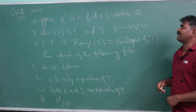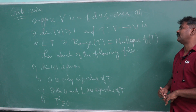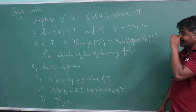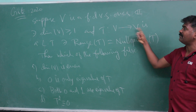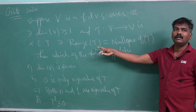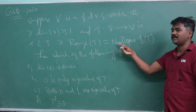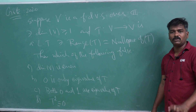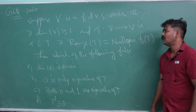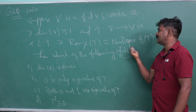Suppose V is a finite dimensional vector space over ℂ, and the dimension of V is at least 1. T goes from V to V. The range of T (image space) and the null space are the same. Given this condition, which of the following statements is false?